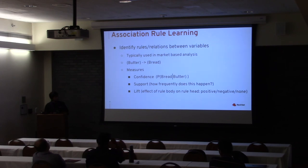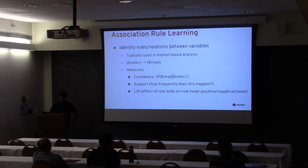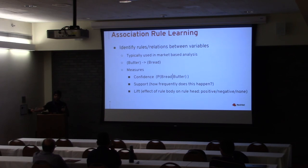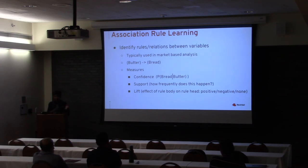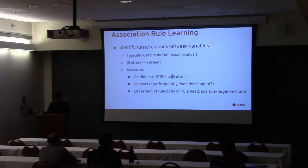Support tells you how frequently the association occurs. Lift is a measure of the effect of the rule body — in plain terms, does buying bread increase, decrease, or have no effect on buying butter? A lift greater than one means positive association, less than one means negative, and around one means no relevance. Now how do you tie this to a software development or QE environment?